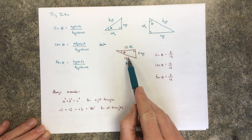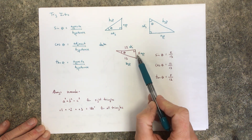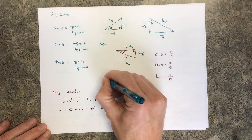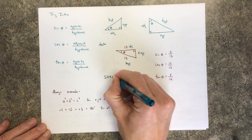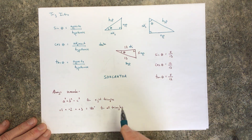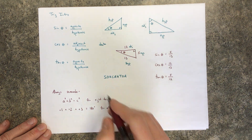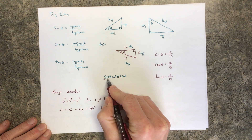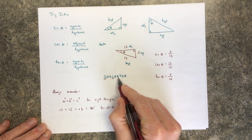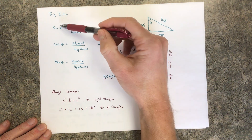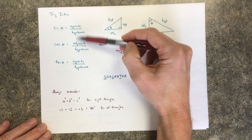To help remember these, a lot of people use SOHCAHTOA — it's a mnemonic. SOH: Sine is Opposite over Hypotenuse. CAH: Cosine is Adjacent over Hypotenuse. TOA: Tangent is Opposite over Adjacent. SOHCAHTOA helps you remember what trig function goes with what ratio.